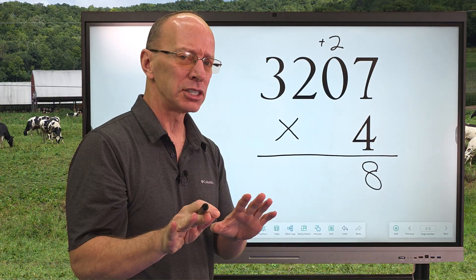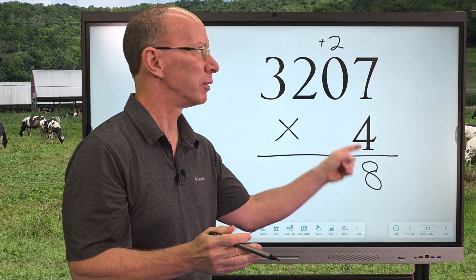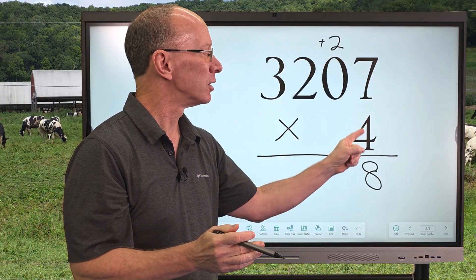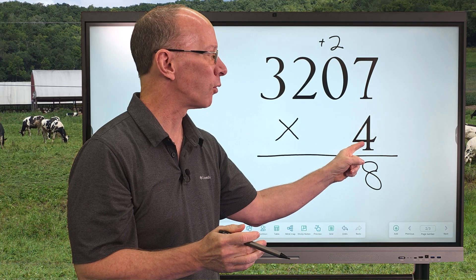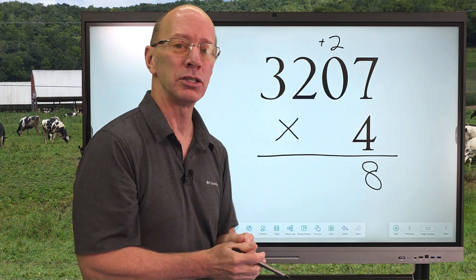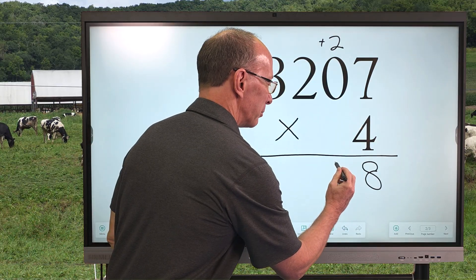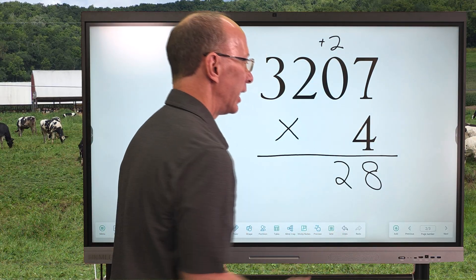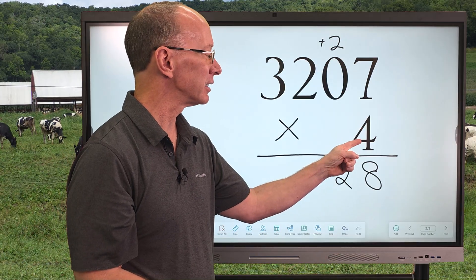Now this is kind of tricky here. We are doing the next number here. Remember, we're not adding that one yet. It's 4 times 0 is 0 and 0 plus the 2 would be 2. So, I go ahead and put the 2 right here.